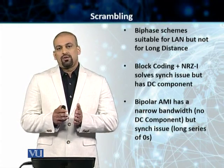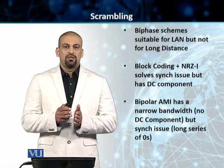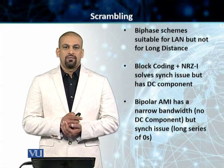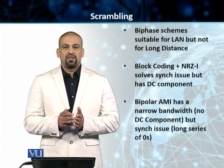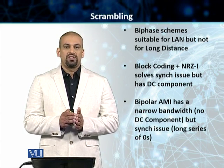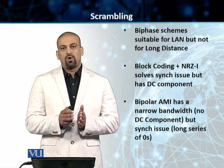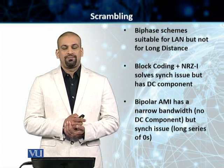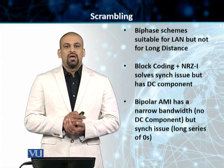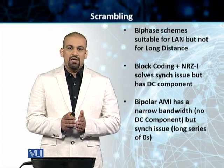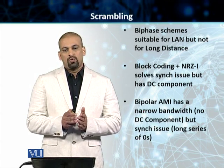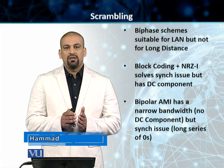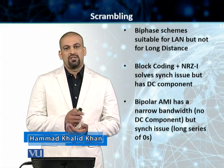Students, we will discuss the third technique of digital data to digital signal conversion, and the name is scrambling. We previously covered line coding and multiple line coding schemes, then block coding and how it can be used in combination with line coding. Bi-phase line coding schemes are suitable for dedicated links within a local area environment but they are not suitable for long distance communication.